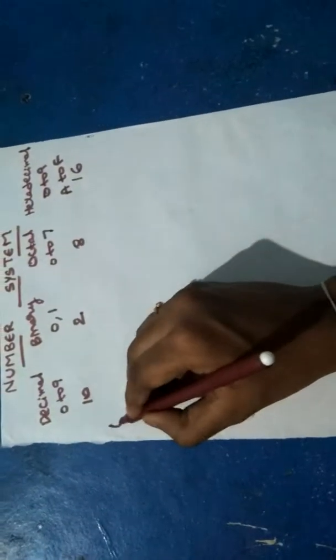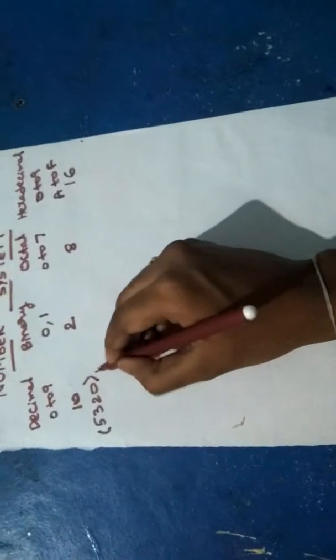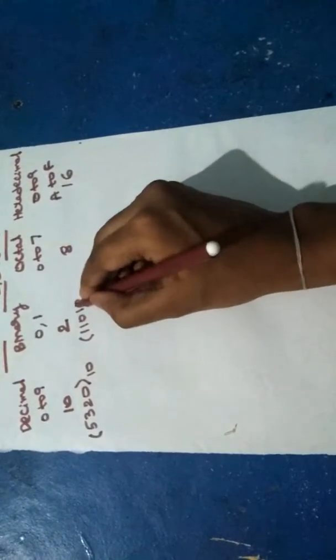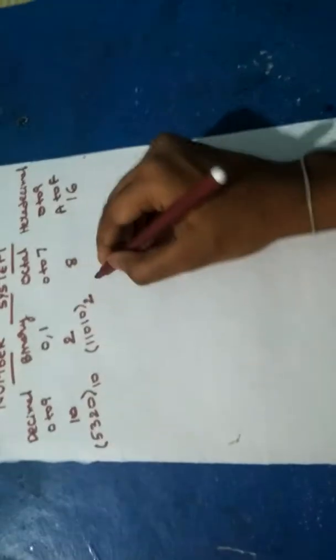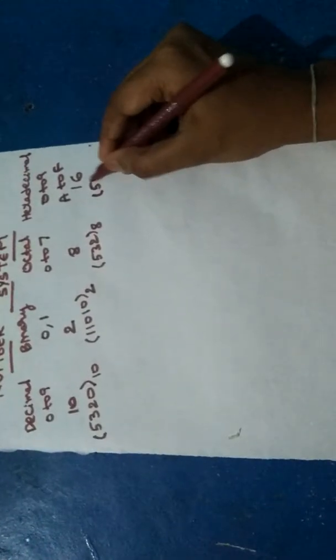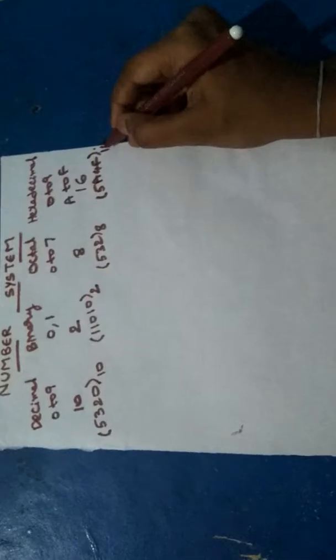Now let us see some examples. The example of decimal number system is 5 3 2 0 like this base 10, and for binary 1 1 0 1 0 of base 2, and for octal 5 3 2 of base 8, and for hexadecimal 5 A 4 F of base 16. This is how the representation is present.